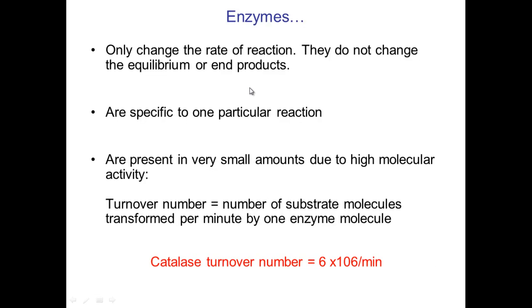Some important things to do with enzymes: they only change the rate of reaction, so rate means how quickly it is happening. They do not change the equilibrium or the end products. They have no effect on the type of product that is made.